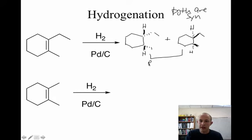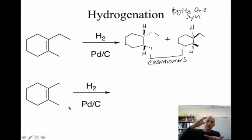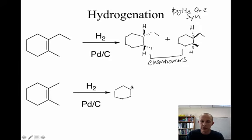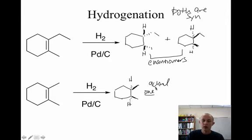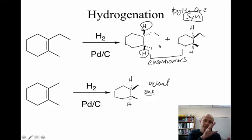These are enantiomers. In the next case, since the two groups are the same, it doesn't matter if we add the two hydrogens from the top or the bottom — we get both products, but it turns out they're the same compound. We're not getting enantiomers because there's an internal symmetry plane. Whether we draw both hydrogens down or both hydrogens up, it's the same molecule. So this gives one single achiral product. Hydrogenation takes place by a syn mechanism, so we only see syn products — never the two hydrogens on opposite sides.